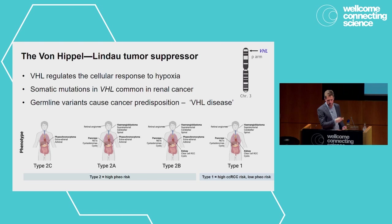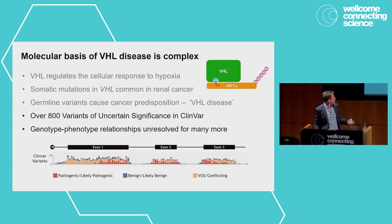The molecular basis of disease is complex. Even though we know the basic mechanisms by which VHL functions in cells, ClinVar reflects this complexity with over 800 variants of uncertainty in a relatively short gene. And the full genotype-phenotype spectrum across tissues is still unresolved for far more variants.